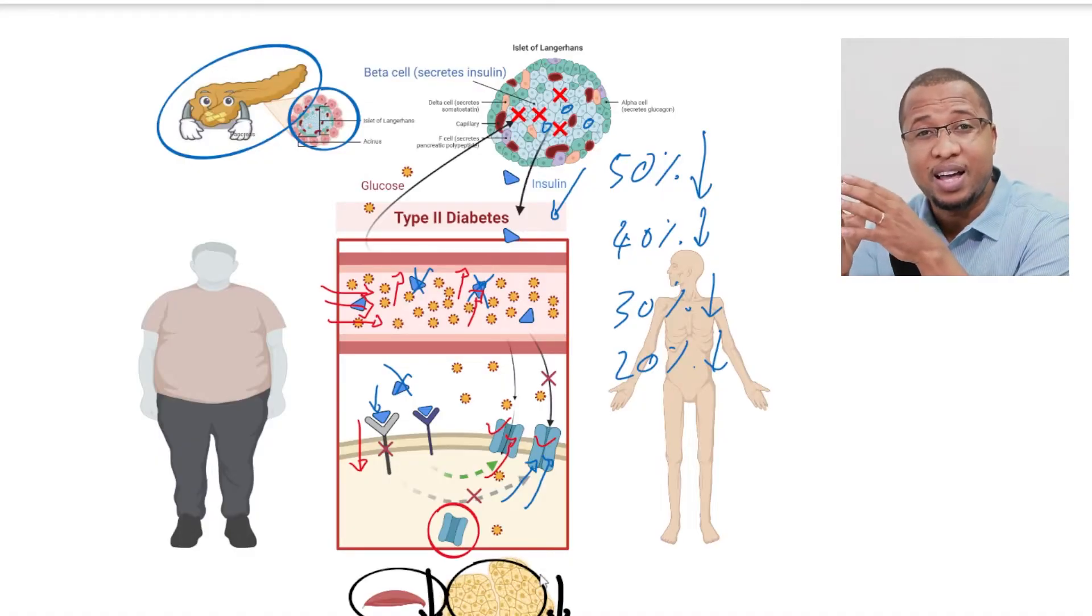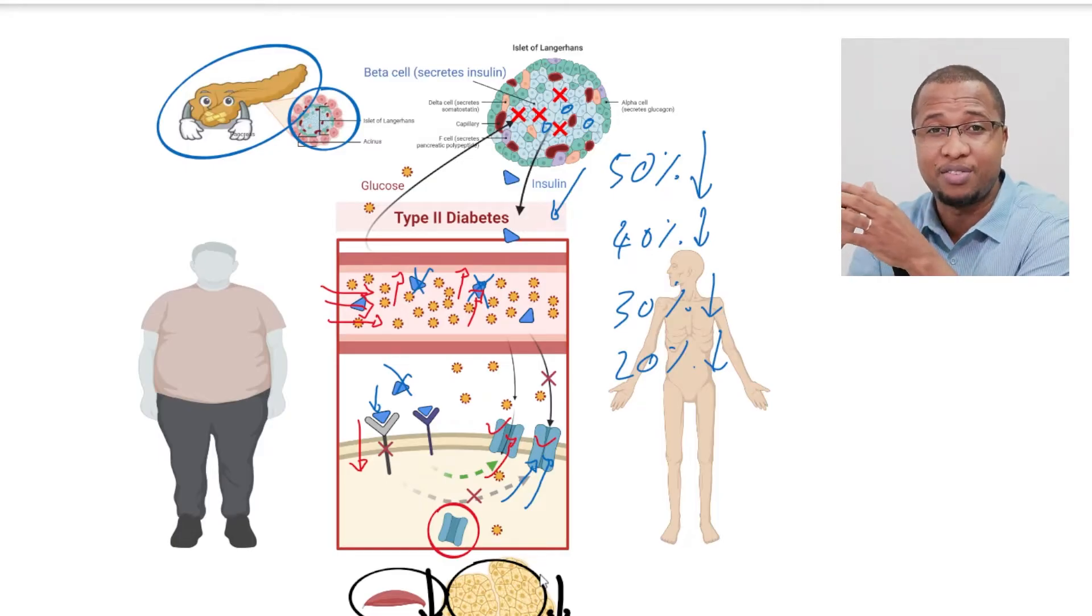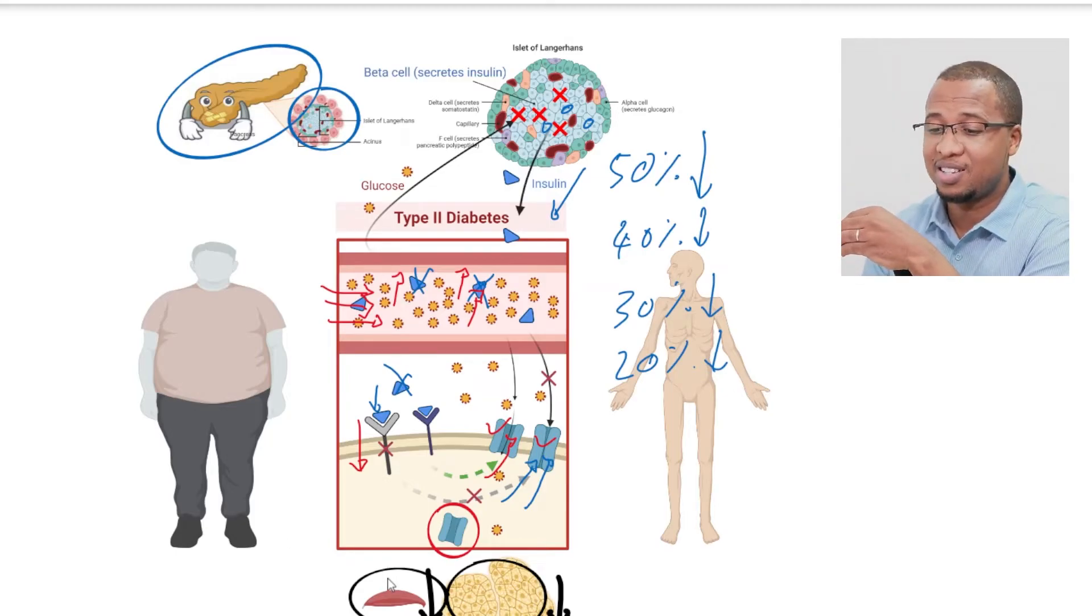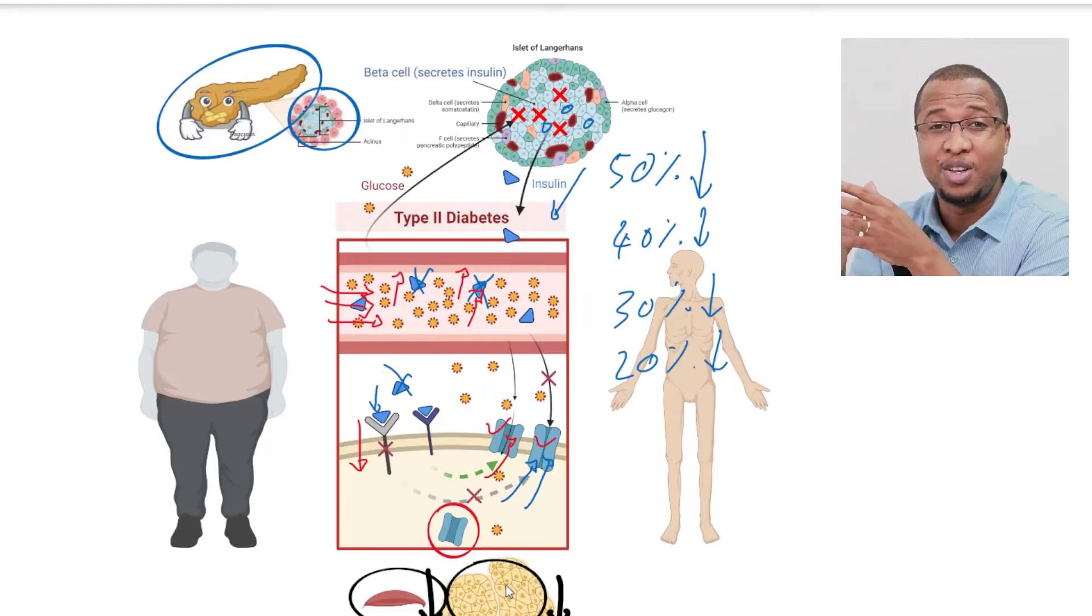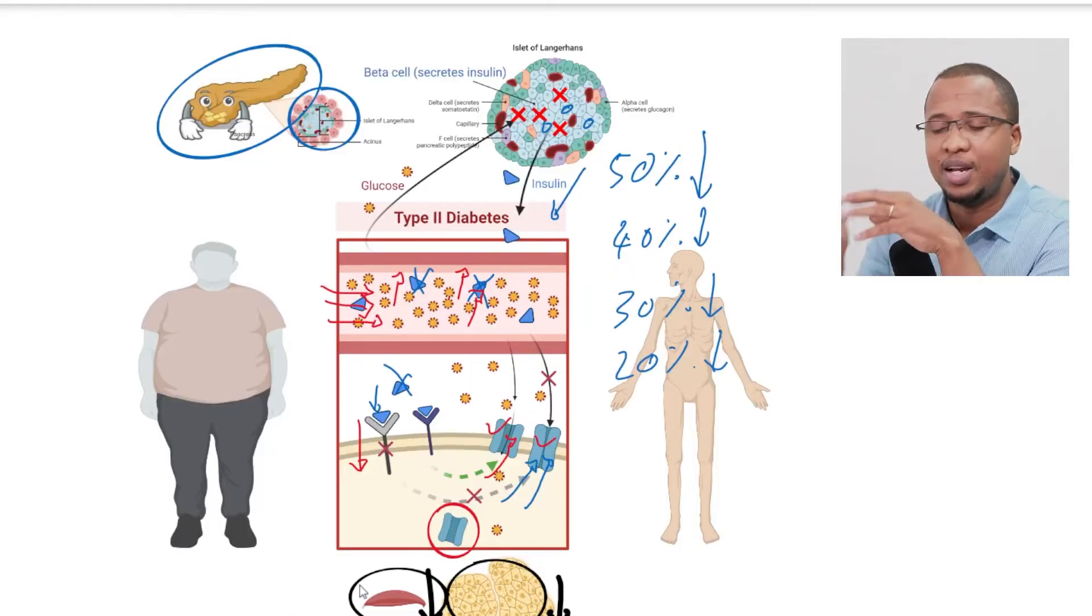Now, this is why I think we should never be mean when we talk to people that have type 2 diabetes. Because sometimes we think they eat too much. But some of them, their cells are really starving and they crave food, especially sugar. Sometimes they can't control it. So we should be considerate.